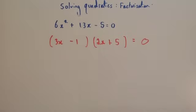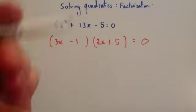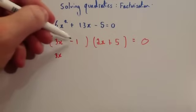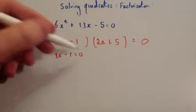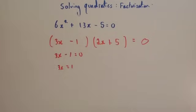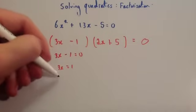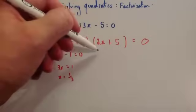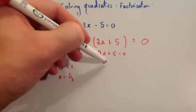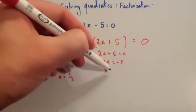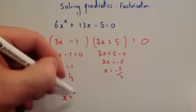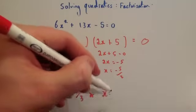Either this bracket is zero or this bracket is zero. With these types I always write it down. For 3x minus 1 equals zero: add 1 to both sides to get 3x equals 1, then divide by 3 to get x equals one third. For 2x plus 5 equals zero: take away 5 from both sides to get 2x equals minus 5, then divide by 2 to get x equals minus 5 over 2. So x equals one third or x equals minus five over two.